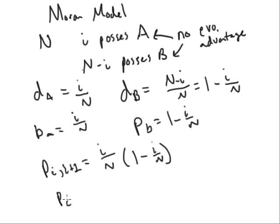Now the probability of starting off with i alleles and then losing one person with an A allele, that's minus 1, is just going to be the probability that somebody with allele A dies, so i over N, times the probability that somebody with allele B is born, which is 1 minus i over N.